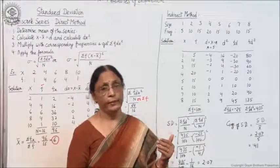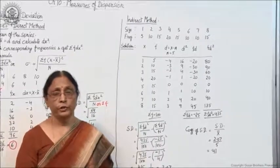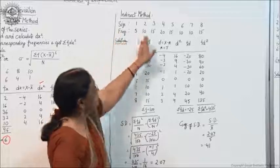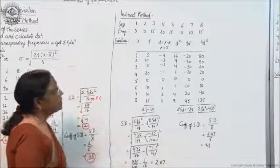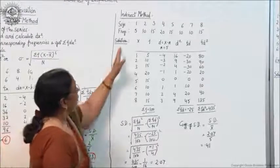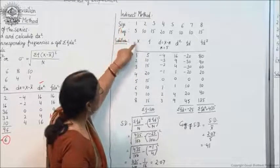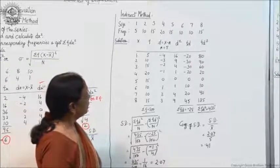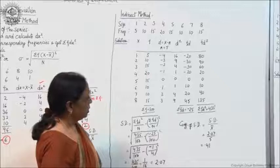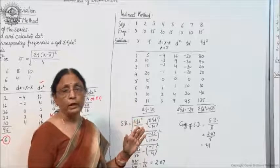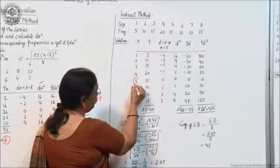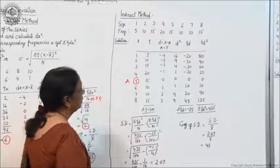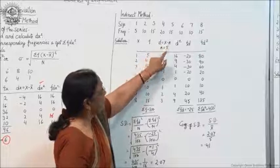Next is the indirect method. Indirect method is the method in which deviations are taken from an assumed mean. Here the data given is size and frequency. You make the first two columns as x and f, noting down the data in order. Then you assume a certain value from the x column as the mean. Here the central value is around 4 or 5, so I have taken 5. We assume 5 as mean, and d equals x minus a, where a is 5.